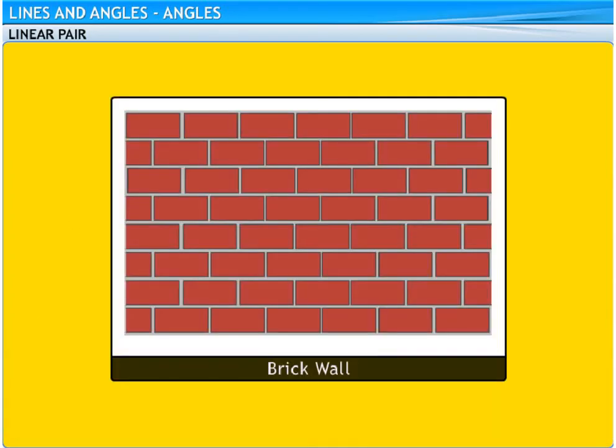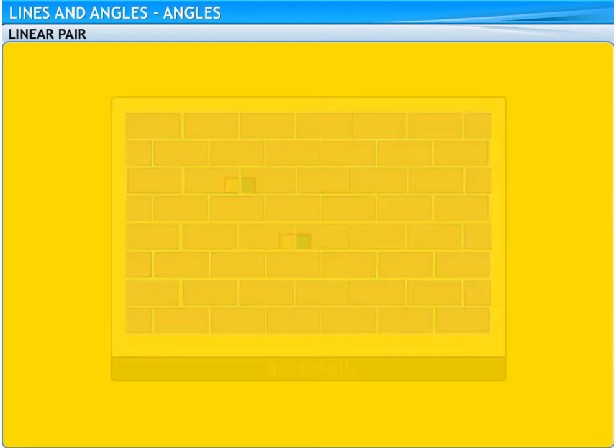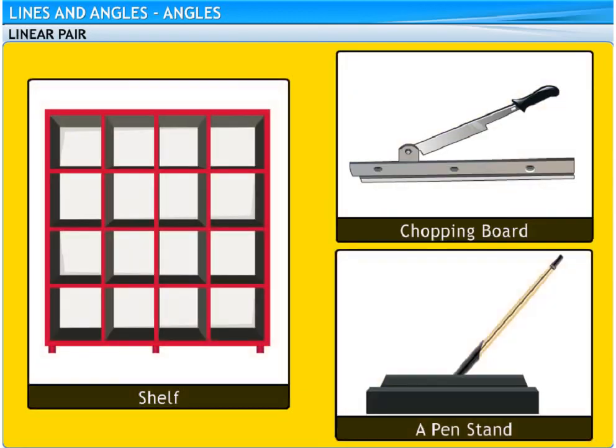Take a look at this arrangement of bricks. Can you see the linear pairs of angles? A chopping board, a shelf, a pen stand are a few other examples where a linear pair of angles can be seen.